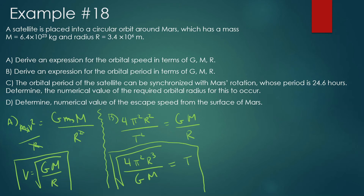Part C says the orbital period of the satellite can be synchronized with Mars' rotation, whose period is 24.6 hours. Determine the numerical value of the required orbital radius. The first thing I want to do is convert 24.6 hours to seconds: 24.6 times 3600 seconds per hour. That gives us approximately 7.76 times 10 to the 4 seconds.